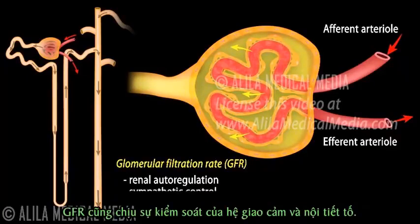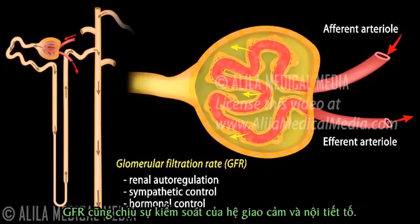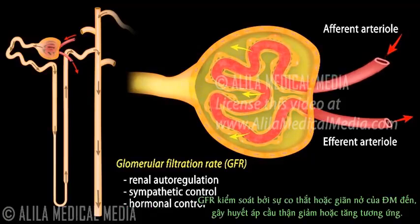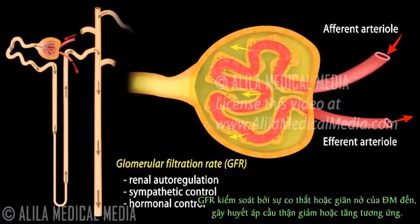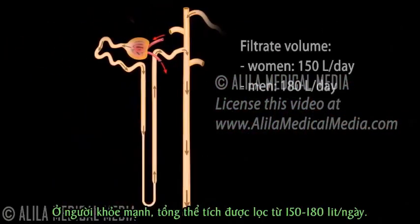The GFR is also under sympathetic and hormonal control. GFR control is generally achieved by constriction or dilation of the afferent arteriole, which causes the glomerular blood pressure to fall or rise, respectively. In a healthy person, the total filtrate volume amounts to between 150 and 180 liters a day.